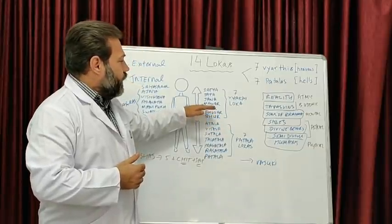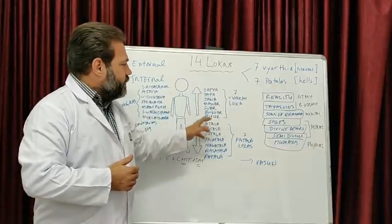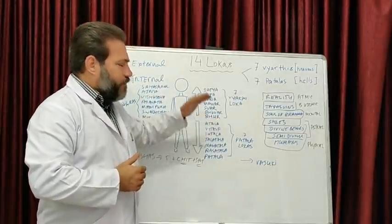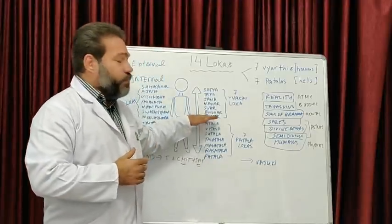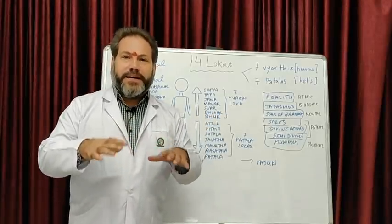We understand that it starts with the Bhu - Bhu, Bhuva, Sva, Maha, Jana, Tapas, Satya. And that these seven are based on the plane of existence where we exist as a human being, as a living being. And that is Bhu Loka or the plane of existence we know as planet Earth.